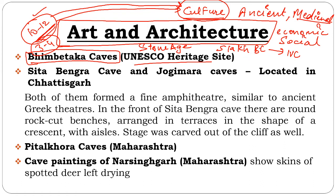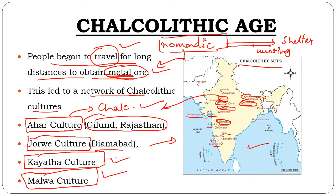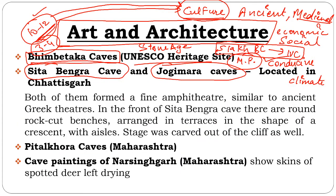Bimbetka Caves are one of the most important sites in India — from 5,00,000 BC through Indus Valley Civilization and even beyond, with Buddhist and Jain monks also residing there. It provided conducive habitat throughout that entire period. Specifically for Chalcolithic Age: Sita Bengra Caves and Jogimara Caves are important. Both formed a fine MP theatre similar to ancient Greek theatres — meaning they are areas where civilization evolved.